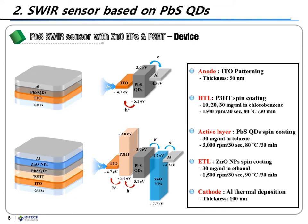PCBM solution with a concentration of 10 mg per ml was prepared by dissolving PCBM in chloroform. Next, to form the photo-active layer, we coated the synthesized PbS quantum dot solution on the substrate and heated the substrate for 13 minutes at 110°C in a vacuum oven.